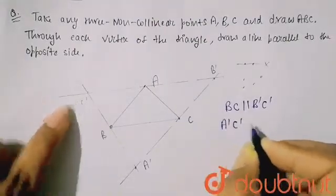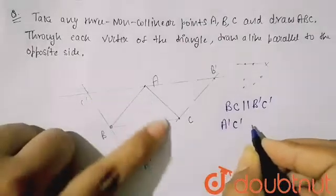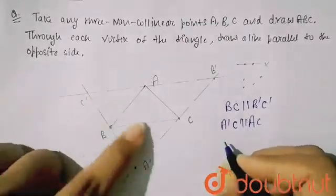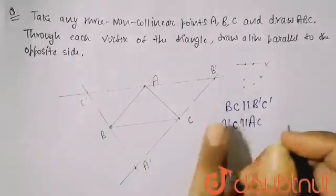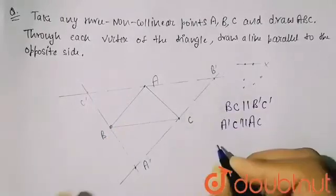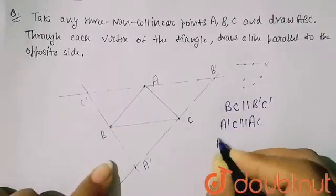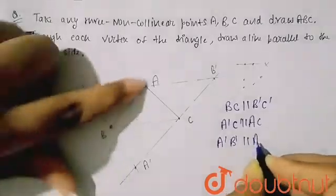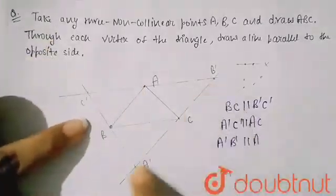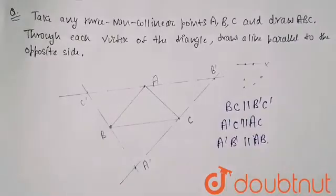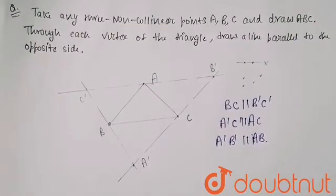A dash C dash is parallel to AC, and A dash B dash is parallel to AB. So these are the three parallel relationships in the figure. I hope you understand the question.